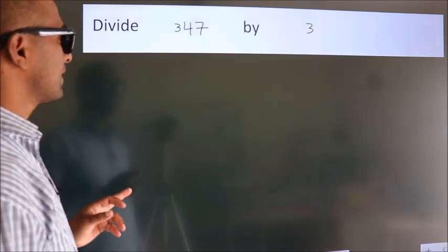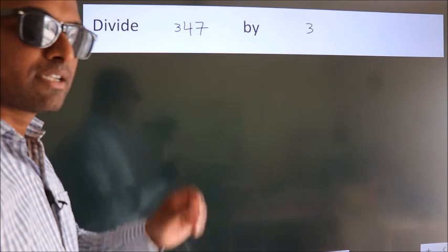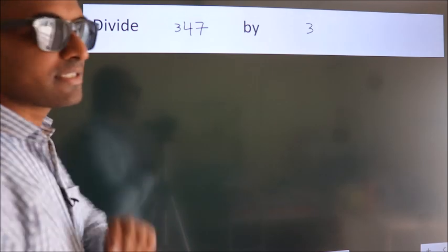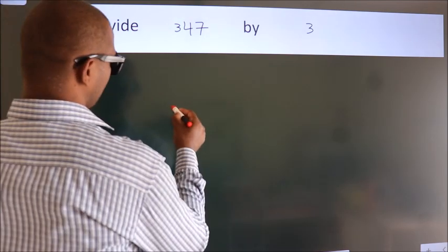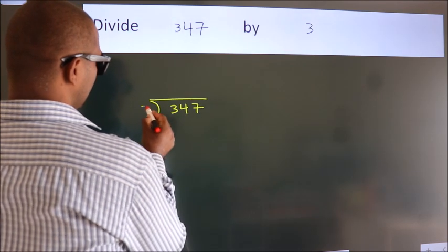Divide 347 by 3. To do this division, we should frame it in this way: 347 here, 3 here.